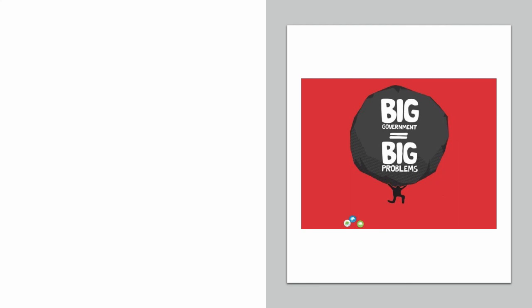We can put a bow on this idea with this statement: economic freedom is reduced when taxes, regulation, and government expenditures replace personal choice, voluntary trade, and market coordination. The more government you have, the more problems you're likely to have. Ronald Reagan made the famous quip that some of the scariest words in the English language are, 'I'm from the government and I'm here to help.' His point was that even well-intentioned help from government is likely to have significant unintended consequences and not lead to the help you think you're going to get.